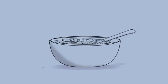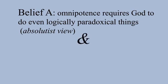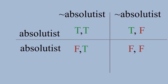In fact, it seems the omnipotence paradox only works if we take a conjunction of the following two statements to be both true. Belief A – Omnipotence requires God to do even logically paradoxical things, which is the absolutist view. Belief B – Logically paradoxical things cannot be part of reality, which is a negation of the absolutist view. It's clear that the omnipotence paradox doesn't even get off the ground to challenge omnipotence, because even before the argument is presented, it requires a theist to implicitly adopt both the absolutist and non-absolutist view of omnipotence at the same time.